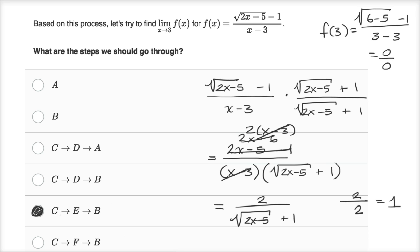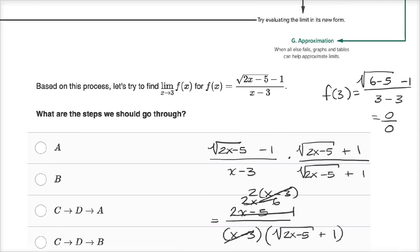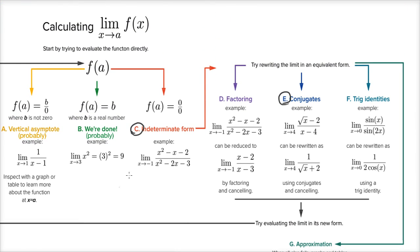So we went from finding indeterminate form, taking the conjugate, and then being able to evaluate it. Let me just show that right over here. When we immediately tried to evaluate it, we got indeterminate form.